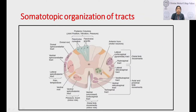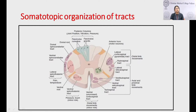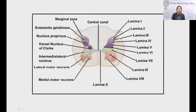There is also somatotopic organization within the gray matter: motor nuclei supplying axial muscles are medially placed, proximal limb muscles are also more medially placed, whereas motor nuclei supplying distal muscles are more laterally placed. Extensor function is more anteriorly or ventrally placed, and flexor muscles are more posteriorly placed. Lamina IX is the most important lamina, housing all the anterior horn cells.